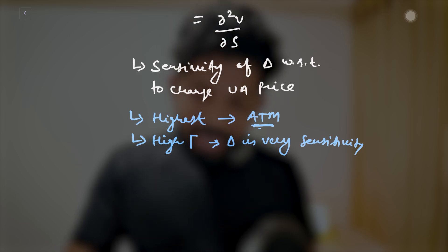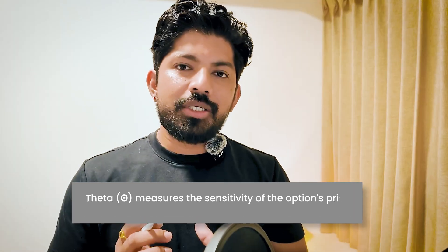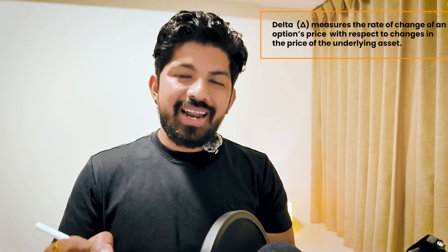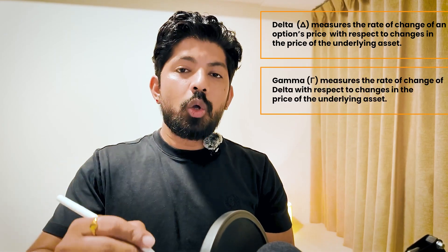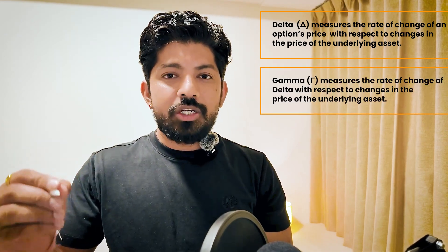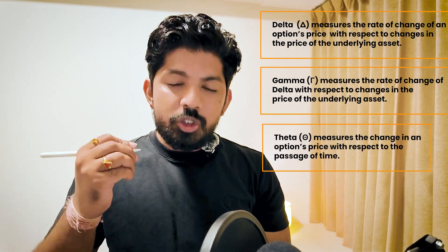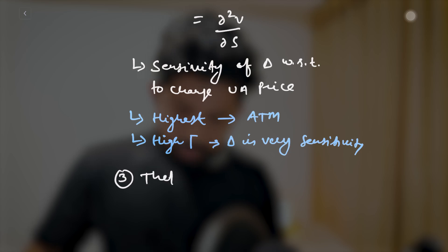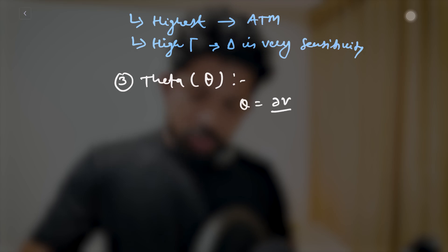The next Greek is theta. Theta measures the rate of change of the option's price with the passage of time — this is known as time decay. To quickly revise: delta measures the option's price with respect to underlying asset price, and theta measures the change in option price with respect to the passage of time. The formula is: theta = dV/dt, where t is the time to expiration.